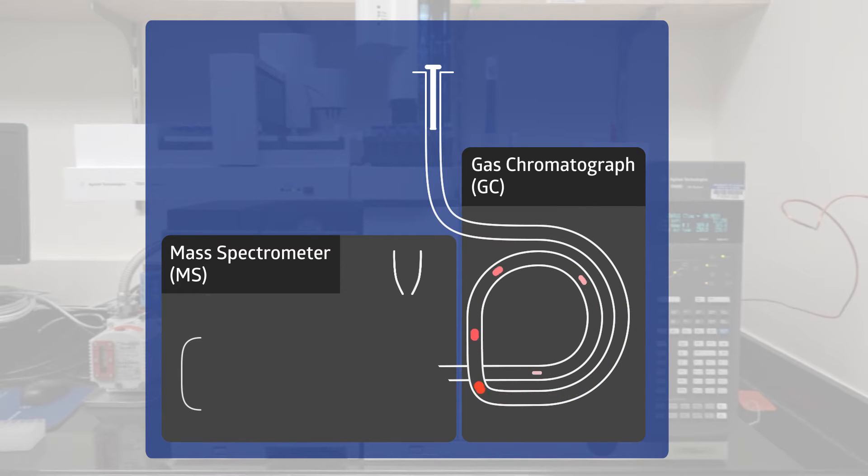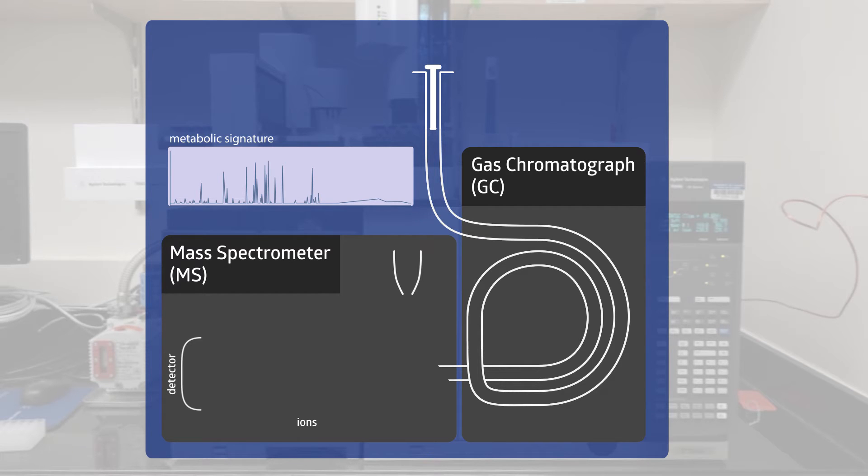That is going to blow apart each one of these compounds. And the ions from those compounds is going to hit the detector, which will then give us the fingerprint or the signature of each one of these metabolic compounds. And we can figure out who they are.